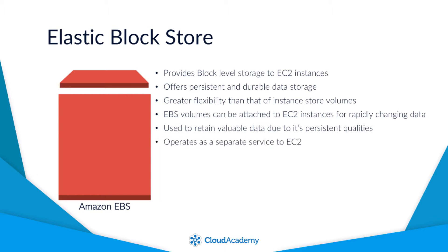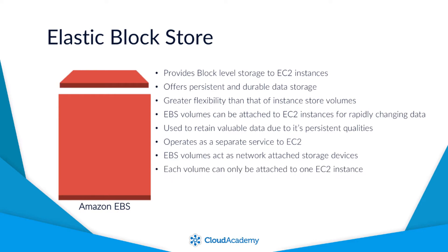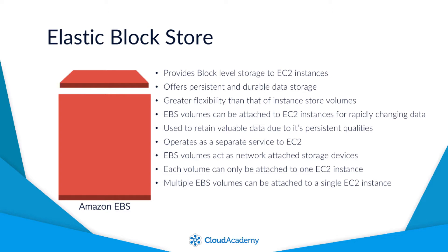EBS volumes are independent of the EC2 instance, meaning that they exist as two different resources. They are network attached to the instance instead of directly attached like instance store volumes. However, a single EBS volume can only ever be attached to a single EC2 instance. Multiple EBS volumes can, however, be attached to a single instance.